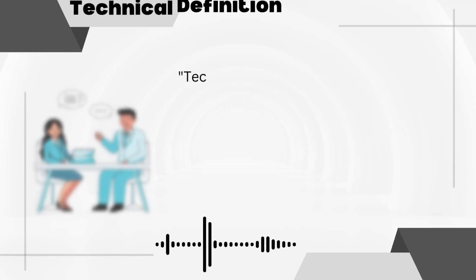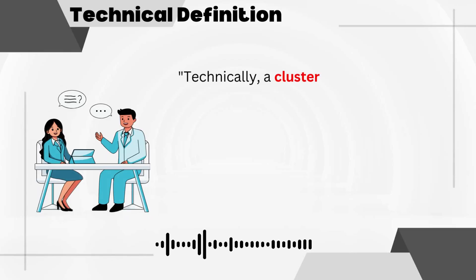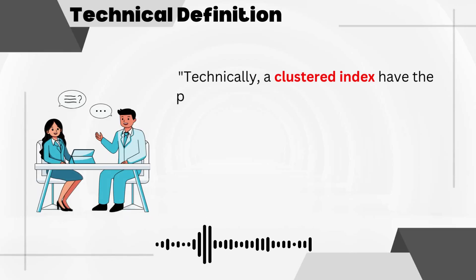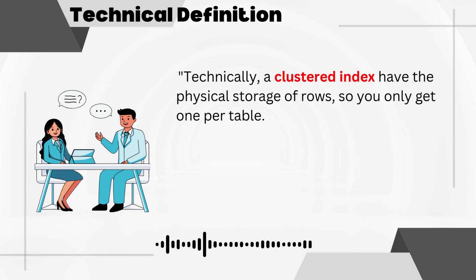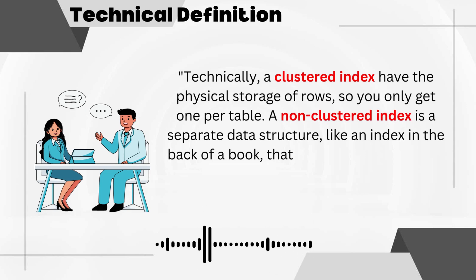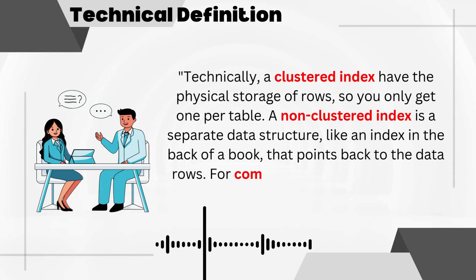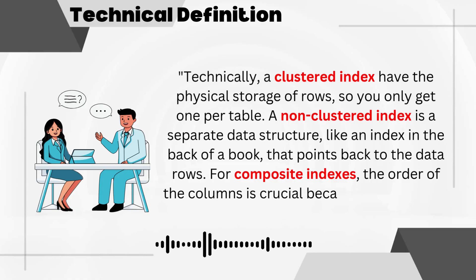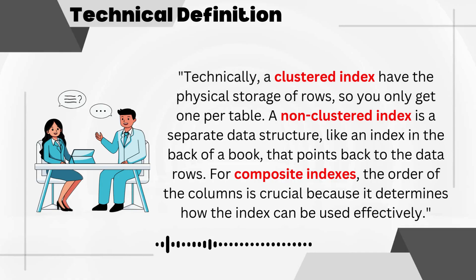Now jump to the technical answer. A clustered index determines the physical storage of rows, so you only get one per table. A non-clustered index is a separate data structure — like an index in the back of a book — with pointers back to the data rows. For composite indexes, the order of columns is crucial because it determines how efficiently the index can be used.